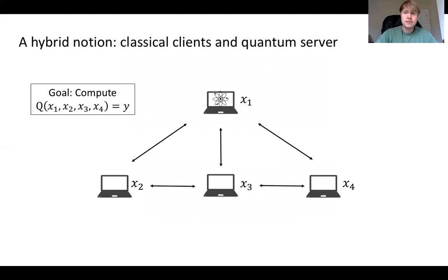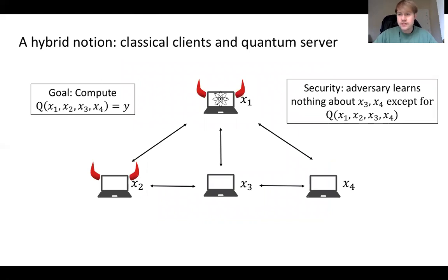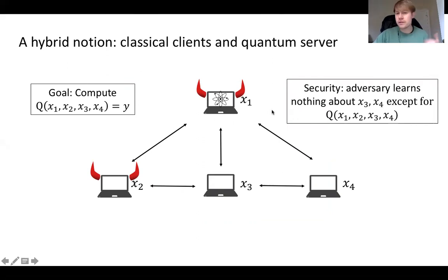For example, you could consider the following notion where we have one quantum server interacting with a bunch of classical clients, and they all want to come together to compute some quantum functionality over their private inputs. This is the type of notion studied in this work. We can define security the same way: an adversary that corrupts any subset of parties, including collusions between clients and server, won't learn anything about the honest party's inputs.